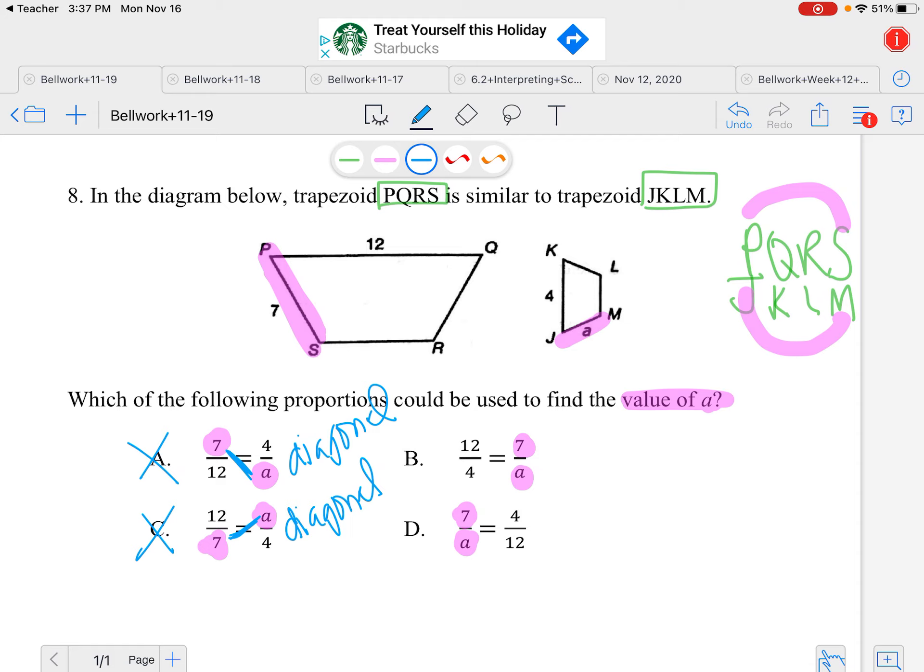Now when I go to look for the 12 and the 4, 12 is P to Q, so that's my first and second letter. Then the first and second letter is J and K, which does match up with 4. So now I have 12 and 4 the same color, 12 and 4 the same color, since both of those match.